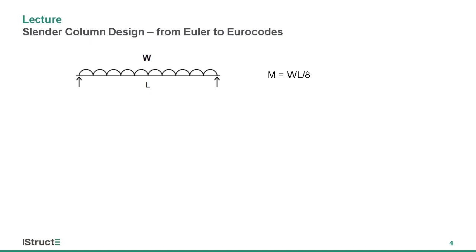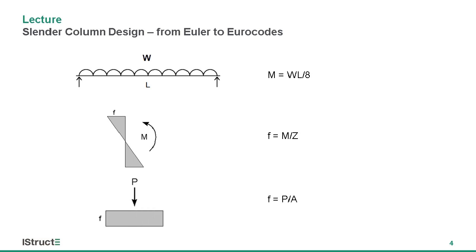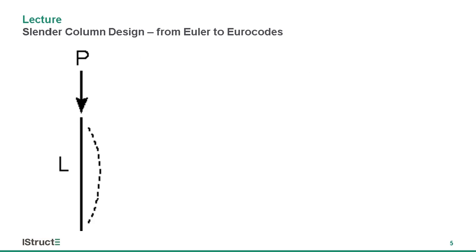The first of these, I hope you all know, is the equation for the maximum bending moment in a beam supporting a uniform load: M = WL²/8. The next one is the equation for the maximum bending stress in a beam. And the third is the equation for compressive or tensile stress in a member: force over area equals stress. Those are three of the four equations.